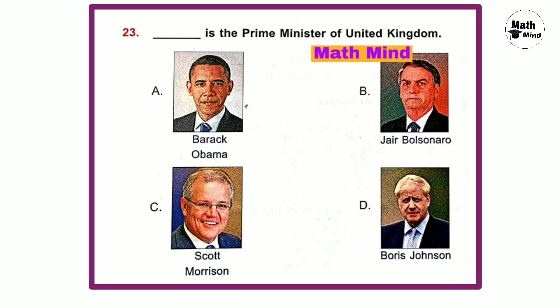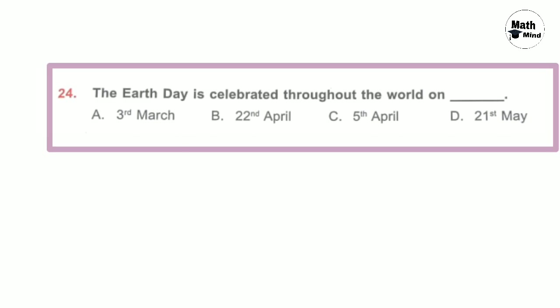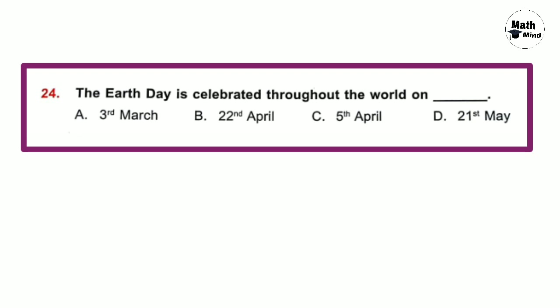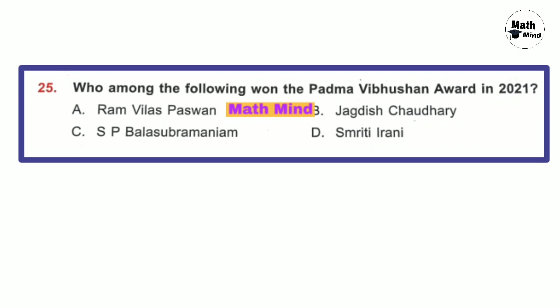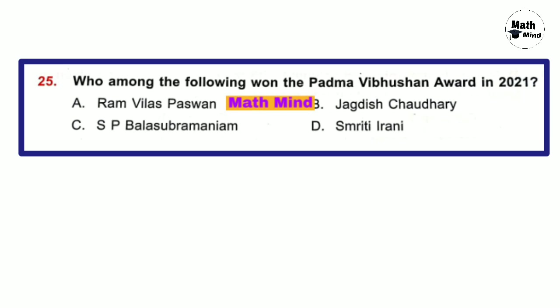Question number 23: Dash is the Prime Minister of the United Kingdom. Option D is correct — Boris Johnson. Question number 24: Earth Day is celebrated throughout the world on dash. Option B is correct — 22nd April. Question number 25: Who among the following won the Padma Vibhushan award in 2021? Option C is correct — S. P. Balasubrahmanyam.